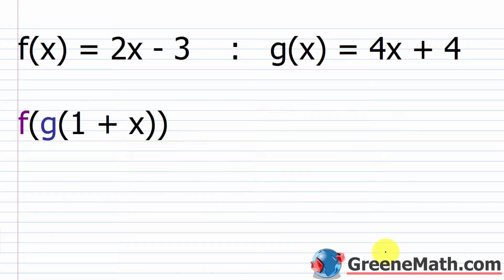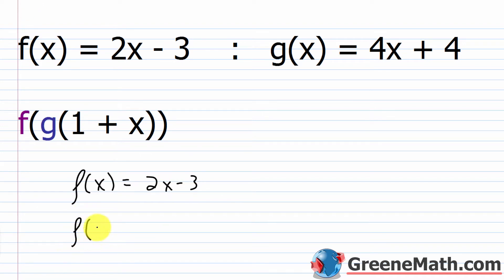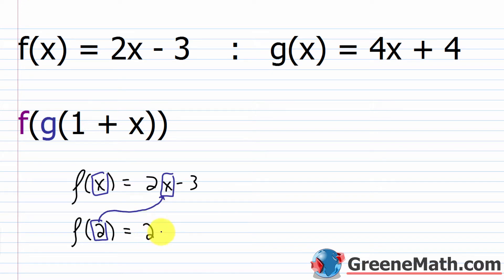Before we jump into the first example, I want to make sure you understand the most basic thing when it comes to function notation. If I take f of x equals 2x minus 3, and I ask you what is f of 2 — 2 is in the place of x. So what I'm asking for is the function's value when I plug in a 2 for x. This is 2 multiplied by 2, then minus 3. 2 times 2 is 4. 4 minus 3 is 1. So f of 2 is 1.